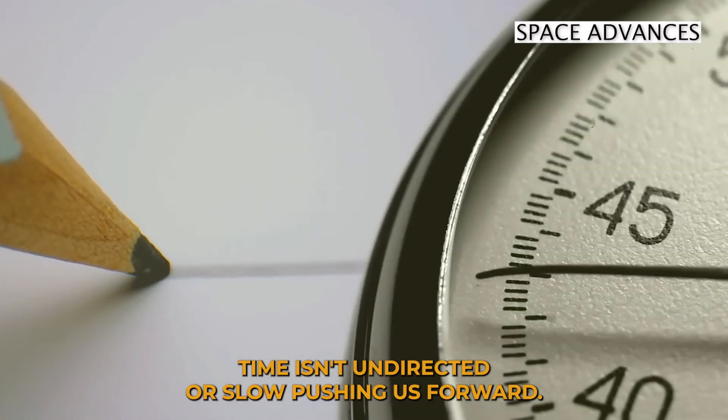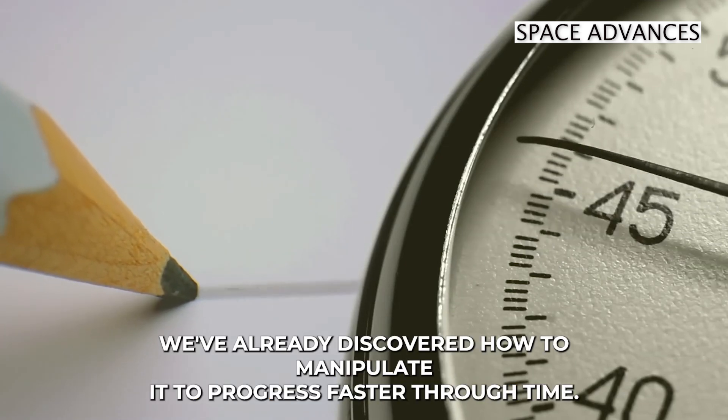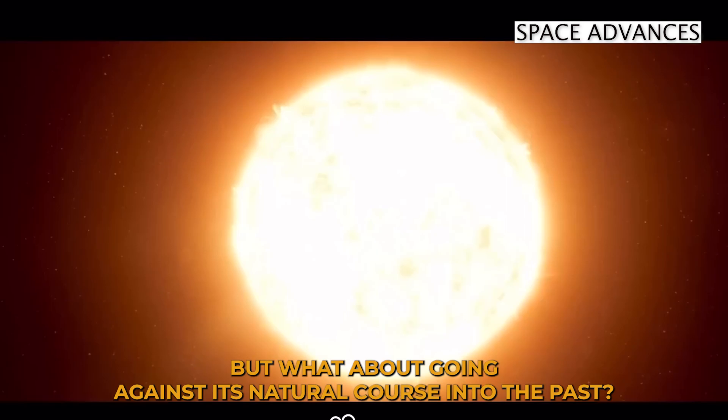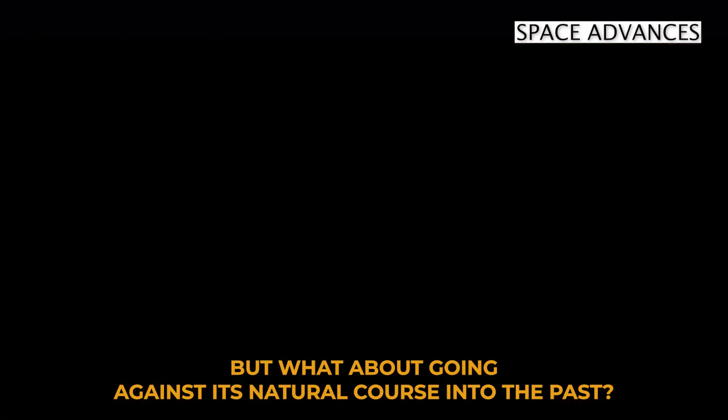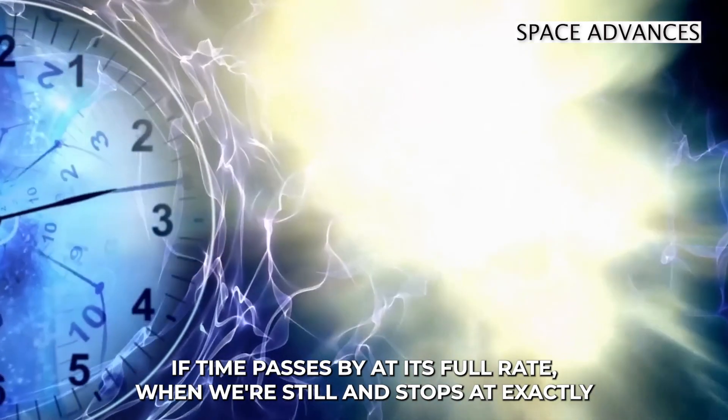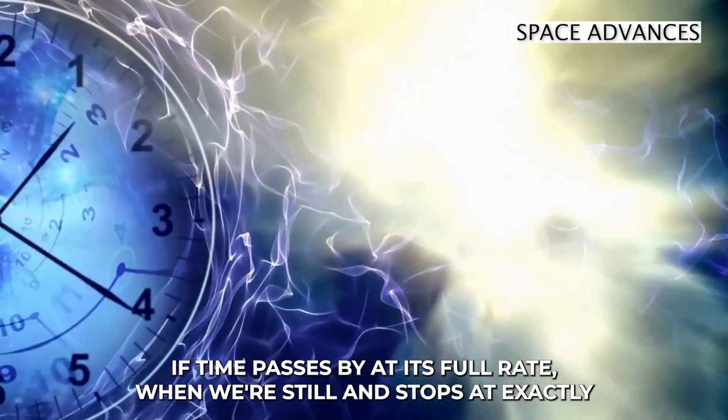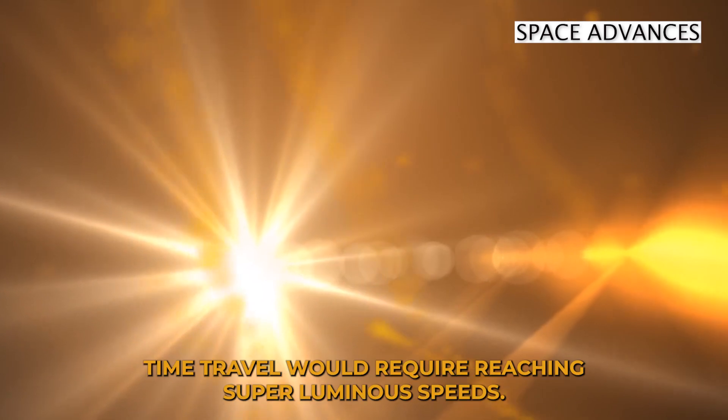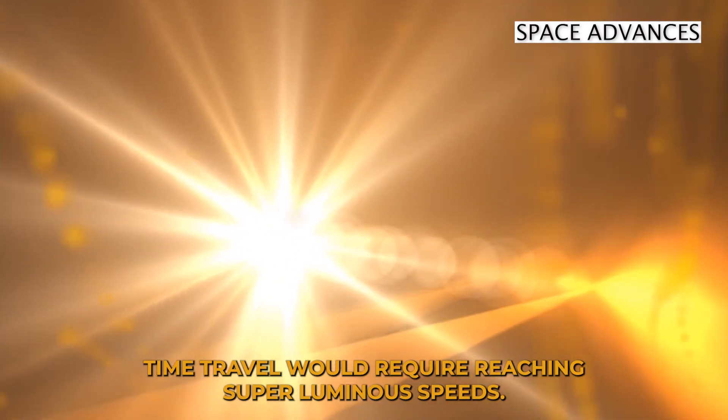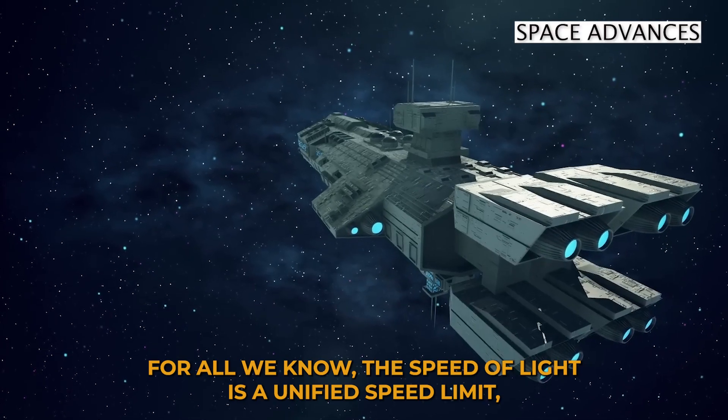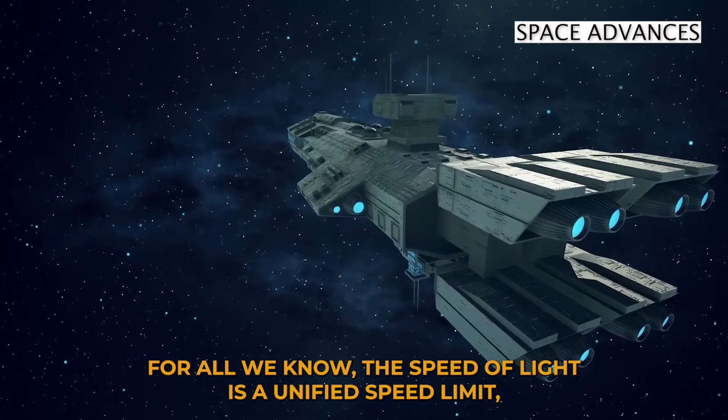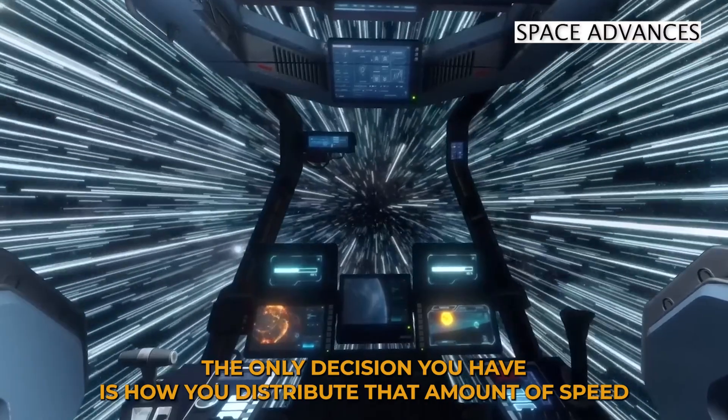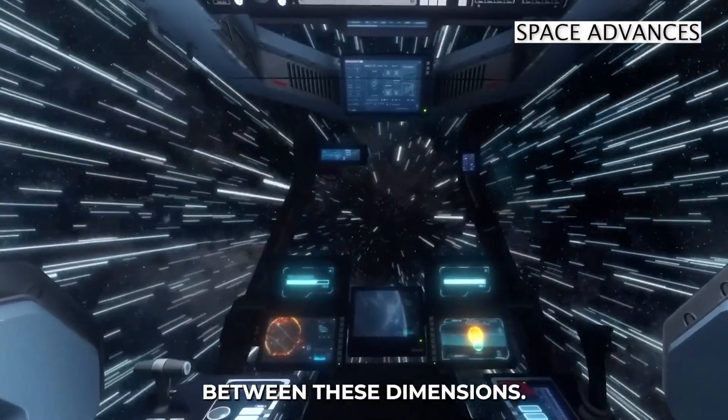Time is an undirectional flow pushing us forward. We've already discovered how to manipulate it to progress faster through time. But what about going against its natural course, into the past? If time passes by at its full rate when we're still, and stops at exactly the speed of light, it's only logical to assume that backwards time travel would require reaching superluminal speeds. For all we know, the speed of light is a unified speed limit, both for moving through time and space. The only decision you have is how you distribute that amount of speed between these dimensions.